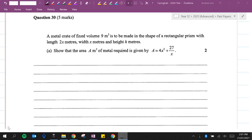A metal crate of fixed volume 9 cubic meters is to be made in the shape of a rectangular prism with length 2x meters, width x meters, and height h meters. Show that the area, A square meters, of metal required is given by A equals 4x squared plus 27 over x.